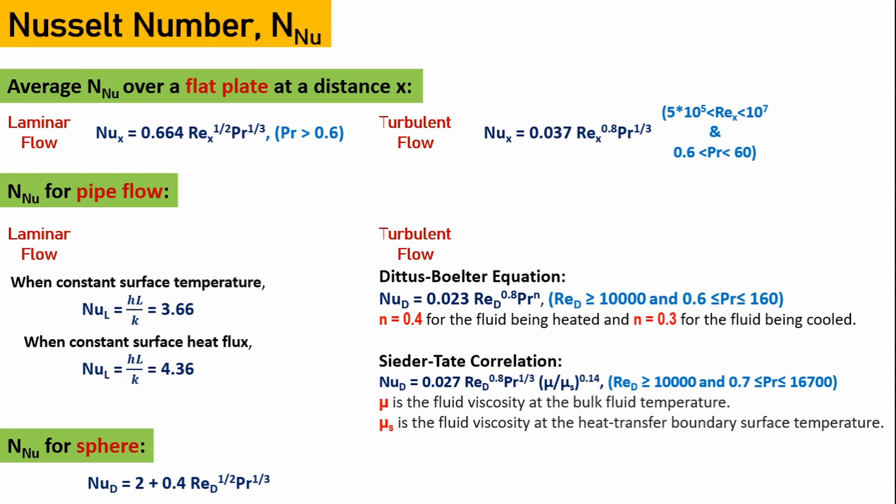— meaning the fluid is stagnant so the Reynolds number equals zero, even then the Nusselt number is 2. This means convective heat transfer is still dominating over conductive heat transfer even when the fluid is not flowing, indicating that a natural convection phenomenon is occurring.